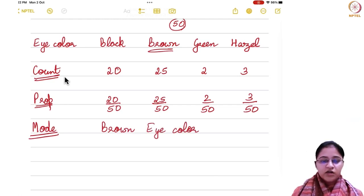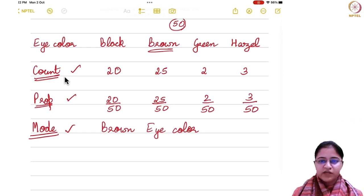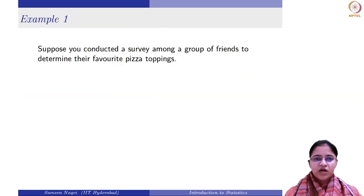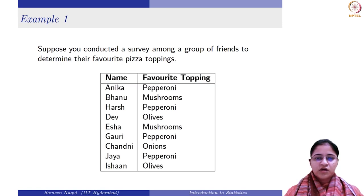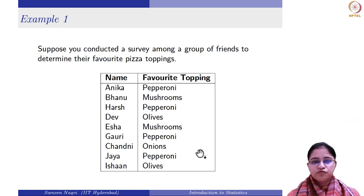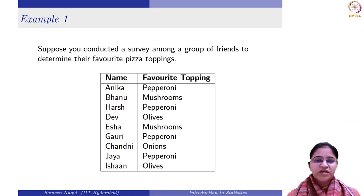Whenever you have a categorical data set, you can either use count, proportion, or mode to summarize that data. Now let us consider an example. Suppose you conducted a survey among a group of friends to determine their favourite pizza topping. You have a data set of 9 friends who marked their favourite topping. The categories are: pepperoni, mushrooms, olives, and onions. Favourite topping is basically a categorical variable and you want to summarize it using count, mode, or proportion.